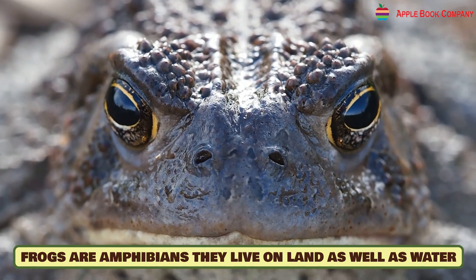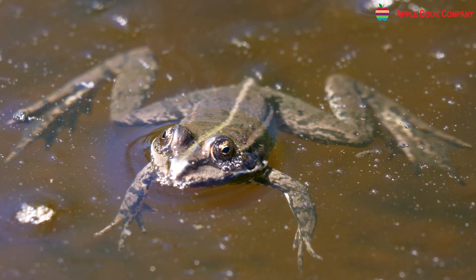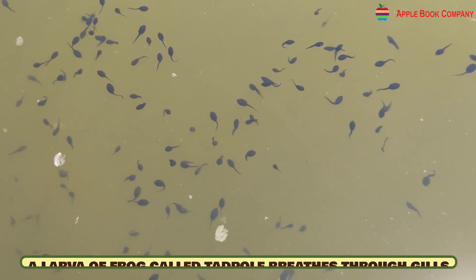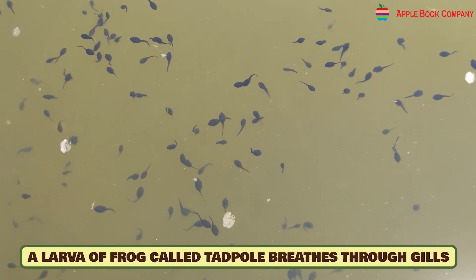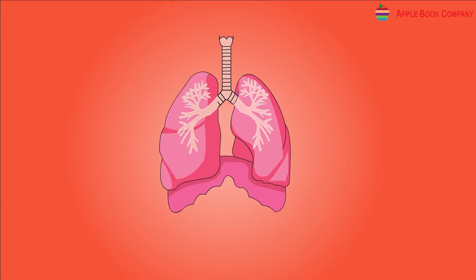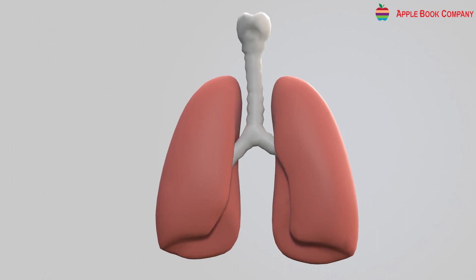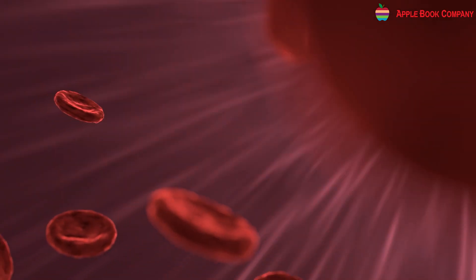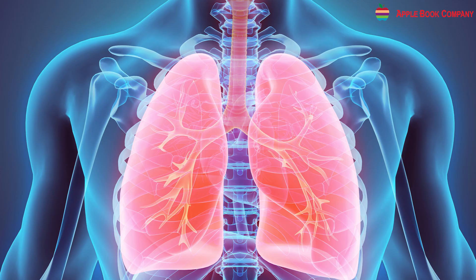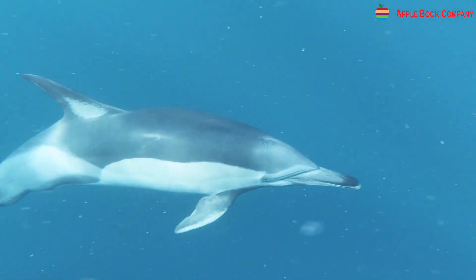Frogs are amphibians. They live on land as well as water. On land, they breathe through their lungs. But when they are in water, they breathe through their moist skin. A larva or frog called tadpole breathes through gills. Mammals, birds and reptiles breathe using their lungs. Human beings breathe in air through their nose. The air is then carried to the lungs through the windpipe. Exchange of gases takes place in the lungs. The oxygen present in the lungs passes with the blood while the carbon dioxide present in the blood is released into the lungs and leaves the body when we breathe out. Aquatic mammals like whales and dolphins also breathe through lungs.